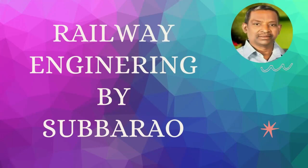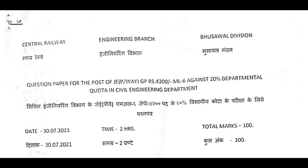Hello friends, welcome to our YouTube channel, Railway Engineering by Subarav. Today our topic is Central Railway Bushawal Division Previous Question Paper for Selection to the Post of Junior Engineering PVA, Agress 20%, Part 5 from Question Number 81-100. This examination was conducted on 30-07-2021 by Bushawal Division in Central Railway.